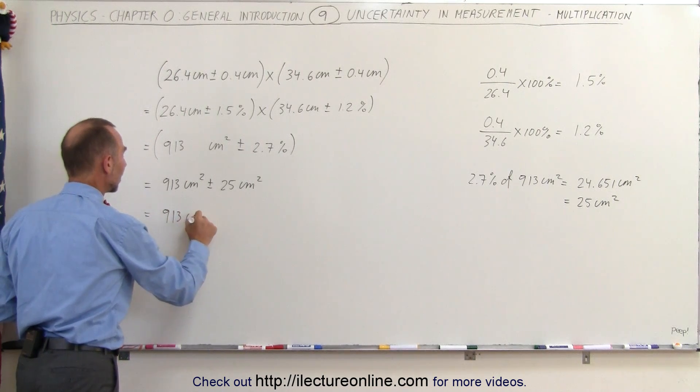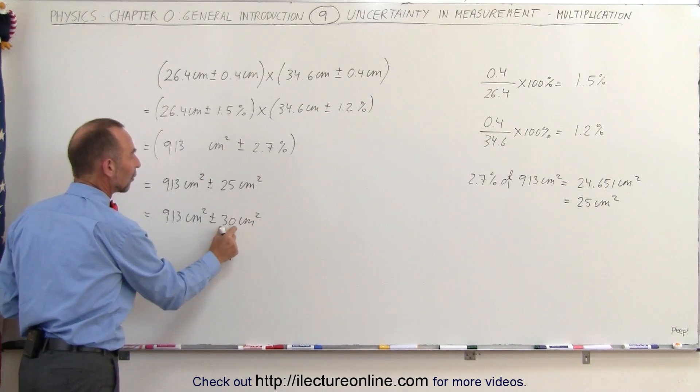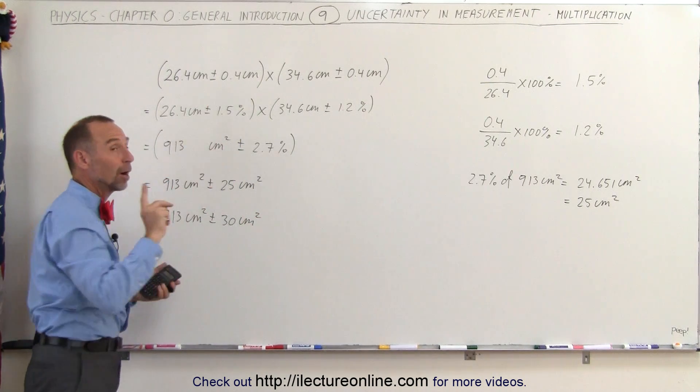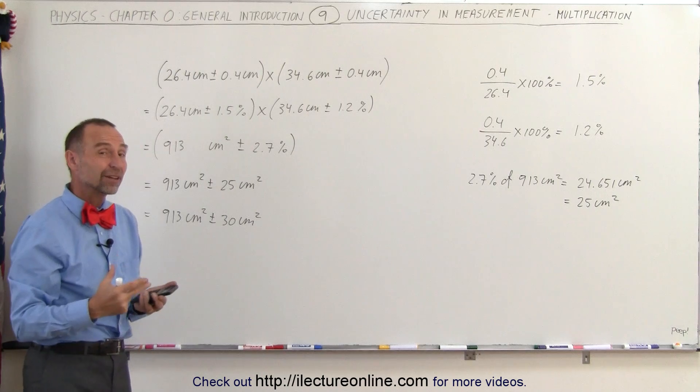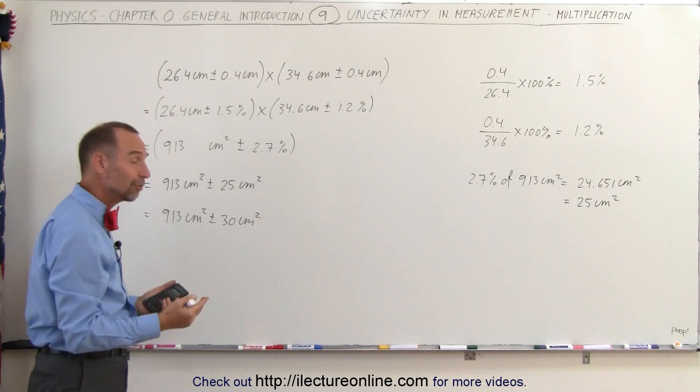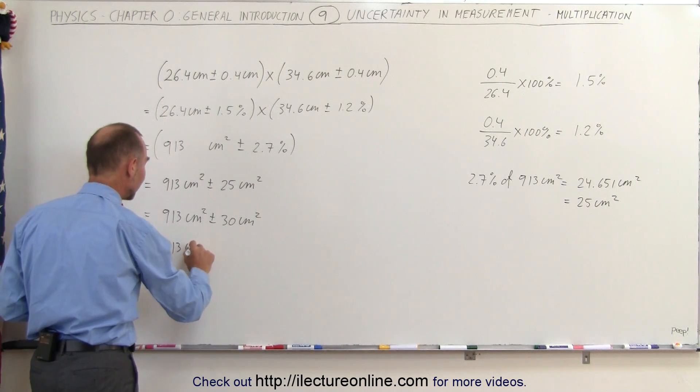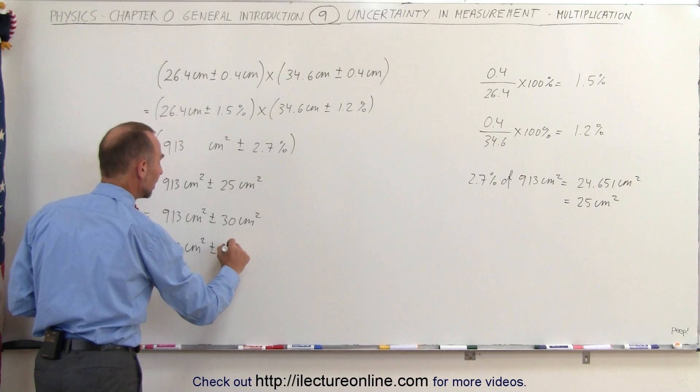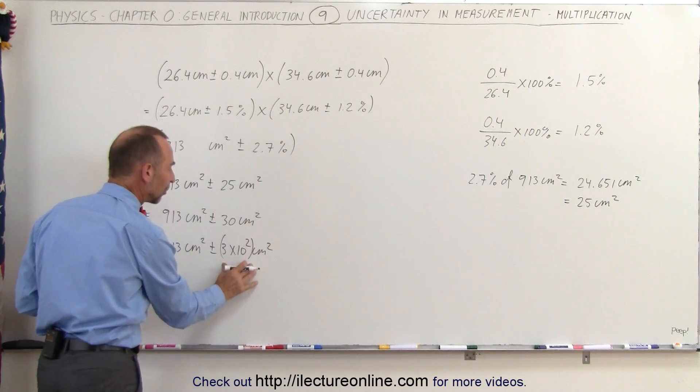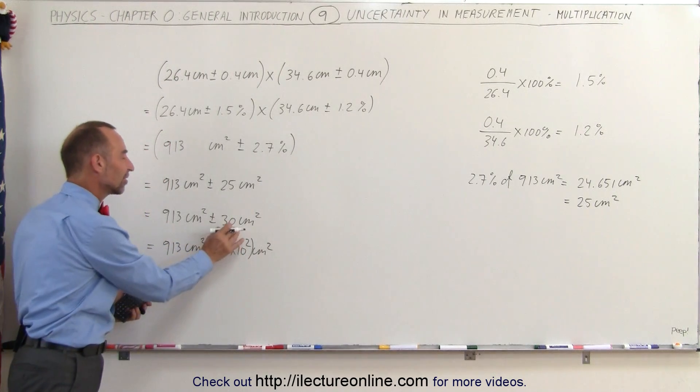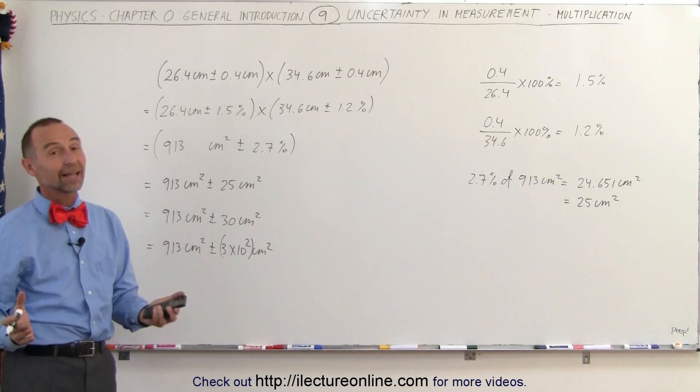So this should be written as 913 centimeters squared plus or minus 30 centimeters squared, so that this only has one significant figure. However, be careful—it depends how you want to look at the number 30. Does the number 30 have one significant figure or two? So if you want to be absolutely certain, you could write it like this: 913 centimeters squared plus or minus 3 times 10 to the second power centimeters squared. To be absolutely certain. However, in most cases people will accept this as only being one significant figure under this particular context, and that's how it's done.